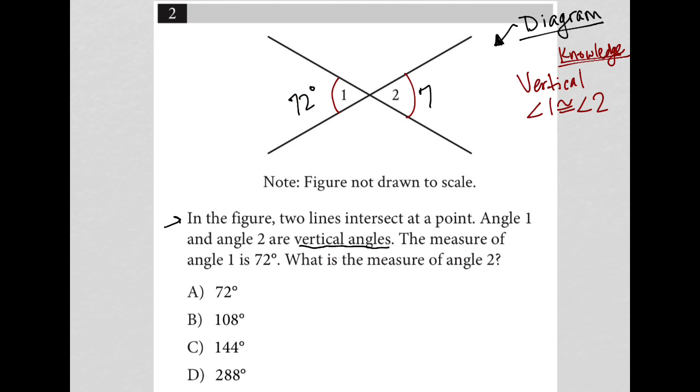It doesn't mention that these vertical angles are equal to each other, so that is still something you would have to know. If you did not know that, please make sure to add this into your notes. Vertical angles are always congruent to each other. So if angle one is 72 degrees, angle two must also be 72 degrees. Therefore, choice A is the correct answer.